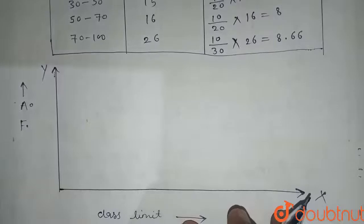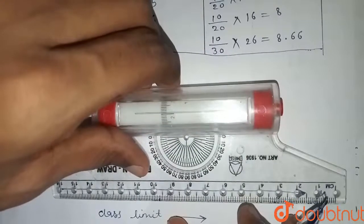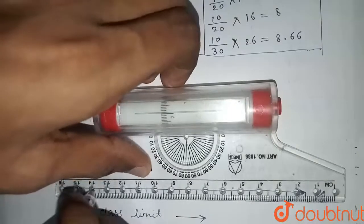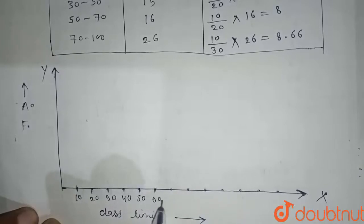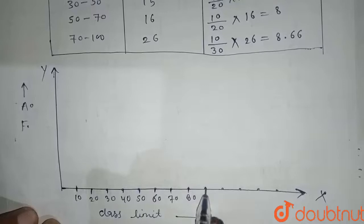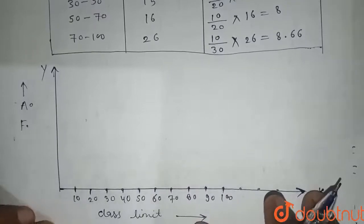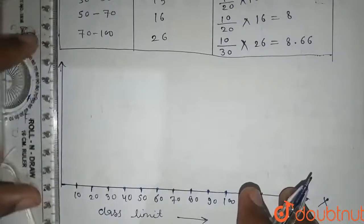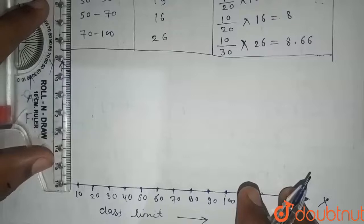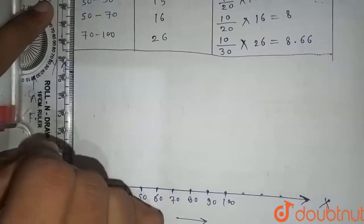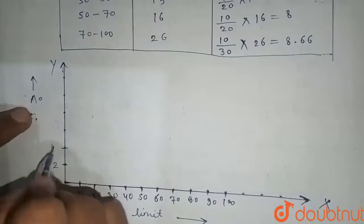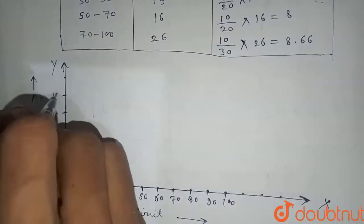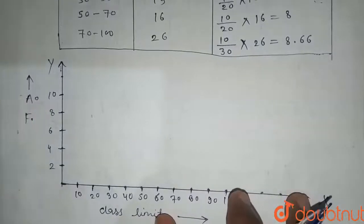On the x-axis, one centimeter equals 10 units: 10, 20, 30, 40, 50, 60, 70, 80, 90, 100. On the y-axis, one centimeter equals 2 units: 2, 4, 6, 8, 10.